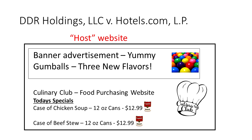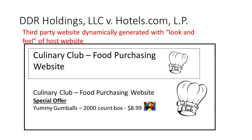Let's visualize what this is really doing. Using a hypothetical example: we have a culinary club food purchasing website that sells food, with a banner advertisement for gumballs at the top. The user clicks on the ad. Before this invention, you would then be taken to the Yummy Gumballs website. This invention instead creates a new webpage that makes it look like you're still on the Culinary Club website, providing better continuity and a smoother shopping experience for the online shopper.